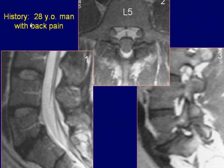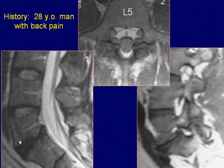28-year-old man with back pain. Sagittal T2-weighted image of the lumbosacral spine reveals grade 1 anterolisthesis of L5 on S1 vertebral bodies.